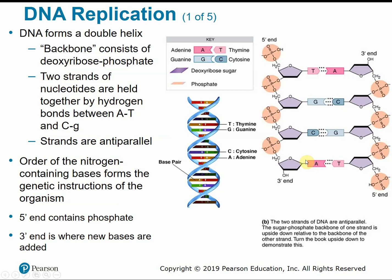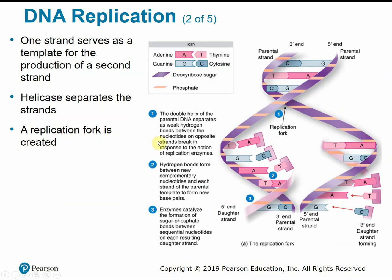Just like words in language, where the order and arrangement of letters have different meanings, different arrangements of bases A, T, C, G can code for different proteins. DNA is double-stranded because one strand serves as a template for the second strand. Before making new DNA molecules, we separate or unzip the original parent strand with an enzyme called DNA helicase. Helicase unwinds the double helix, separates the strands, and creates what's called a replication fork.